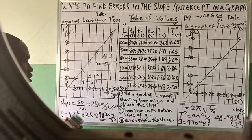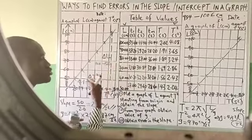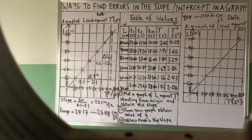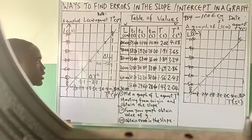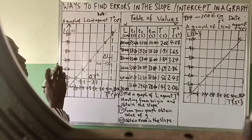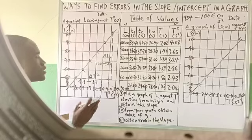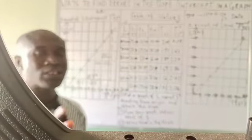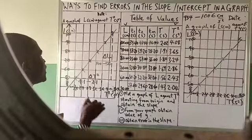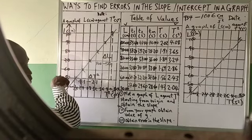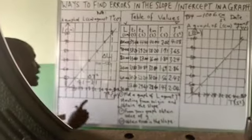Next is to get the error in the slope — error in the slope. We want to see how to get it in two different ways. To get the error, we follow the first method: the method of best fit and worst fit. Before we see how to use best fit and worst fit, it is important to note that the line of best fit is meant to pass through the mean of the vertical points plotted and the mean of the horizontal points plotted.